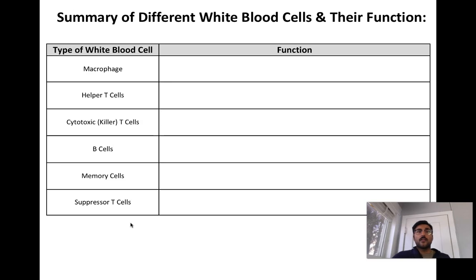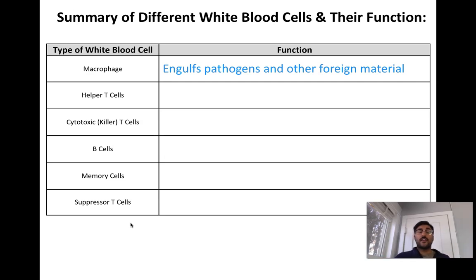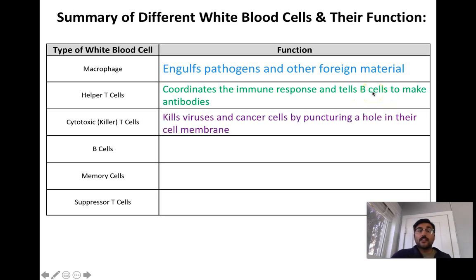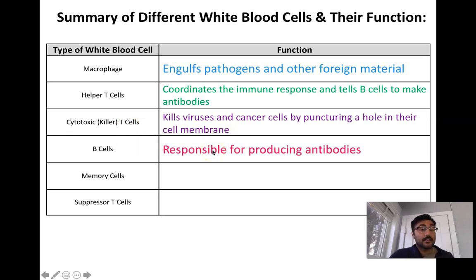Macrophages engulf pathogens and anything foreign through phagocytosis — that big bear hug from a specific type of white blood cell. The macrophage sees a cell with an antigen that doesn't belong, bear hugs it until it gobbles it up, and helps break it down. Helper T cells coordinate the immune response and tell B cells to make antibodies. Killer T cells kill viruses and cancer cells by poking a hole — literally jabbing through the cell membrane. B cells are responsible for producing antibodies that target specific antigens for pathogens that don't belong.